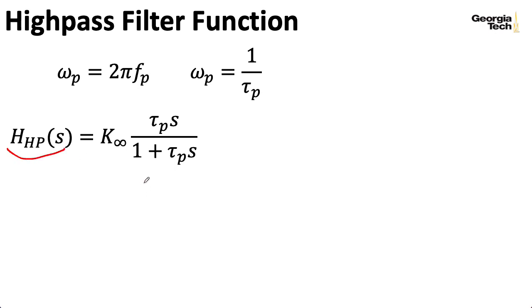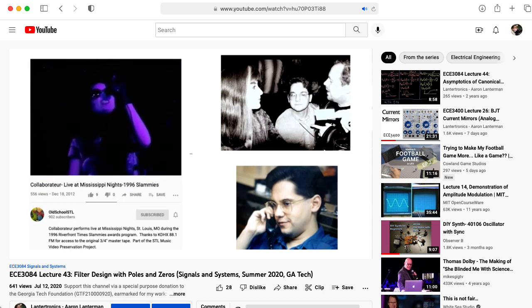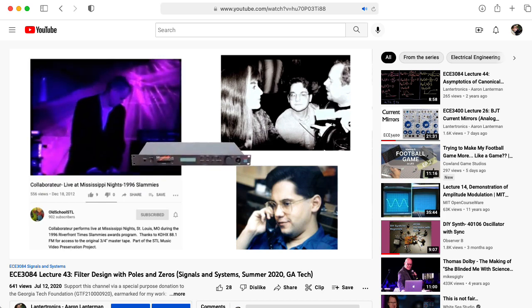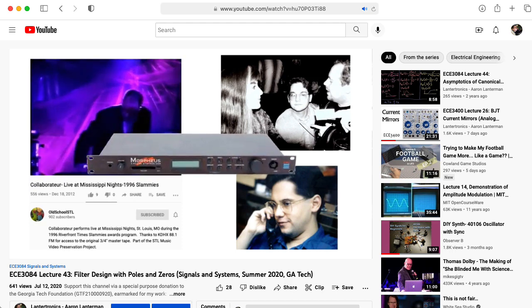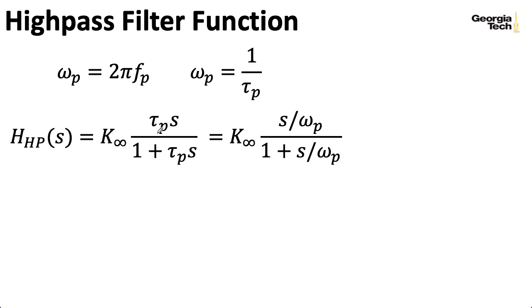So what about a high-pass filter? So we have K_∞ here, and that's going to be what the frequency response goes to as ω goes to infinity. And here we actually now have a zero sitting at the origin in addition to this pole at -ω_p. So zeros are where the numerator is zero, and poles are where the denominator is zero. And if you would like to learn more about poles and zeros, you can check out this lecture from my ECE 3084 signals and systems class. So plugging in 1/ω_p for τ_p here is how Marshall Leach usually writes it. I usually like to multiply the numerator and the denominator by ω_p and write it like this. And this makes it clear that the pole is sitting at -ω_p.